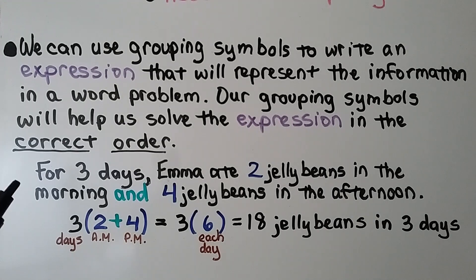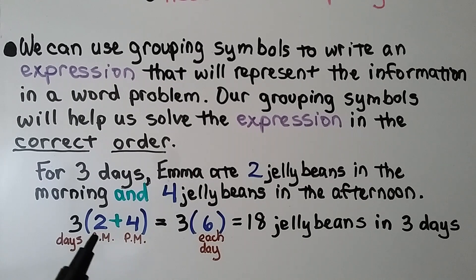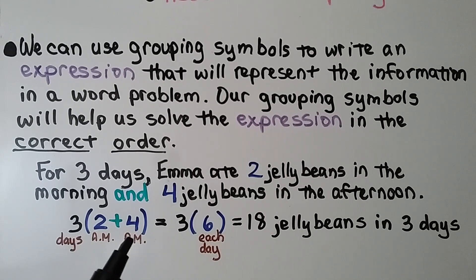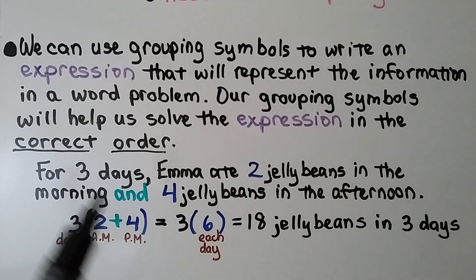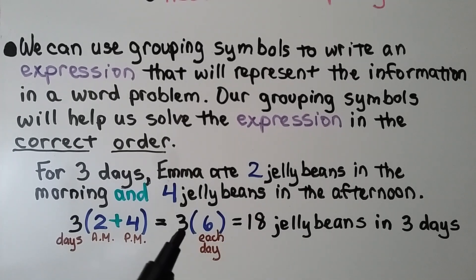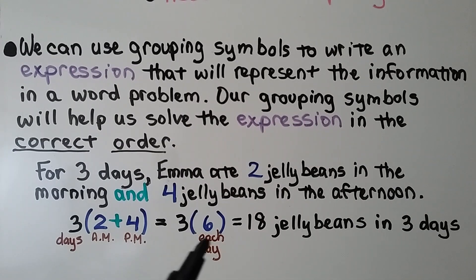For three days, Emma ate two jelly beans in the morning (AM) and four jelly beans in the afternoon (PM). We add 2 plus 4 to know how many she ate each day. Since it says for three days, we multiply by 3. The 3 is right next to the grouping symbol, which means multiply. 3 times 6 equals 18 jelly beans in three days.